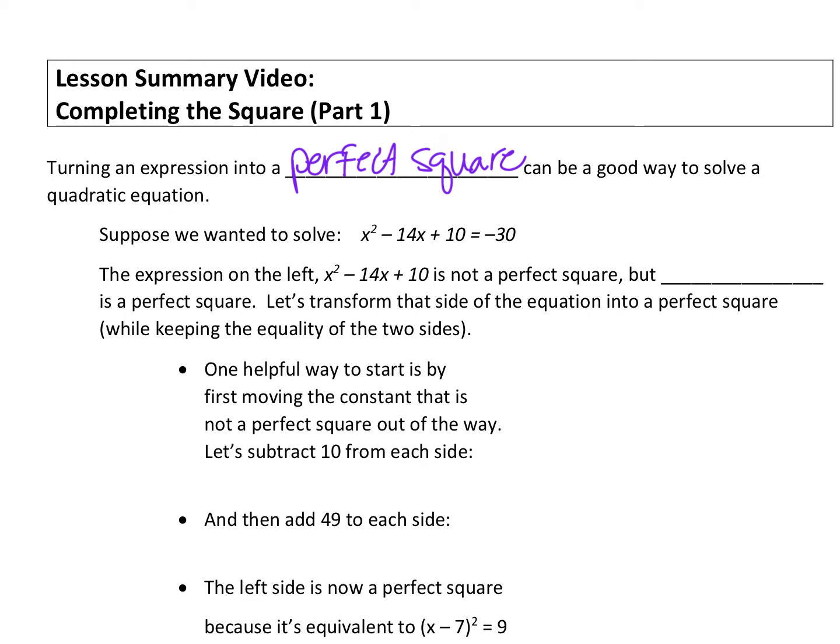Suppose we wanted to solve this equation: x squared minus 14x plus 10 equals negative 30. We would first look at what's on the left side of the equal sign, that expression x squared minus 14x plus 10. That's not a perfect square.